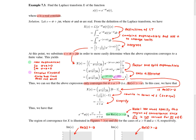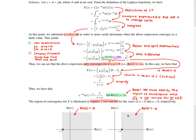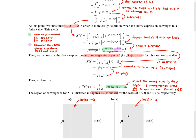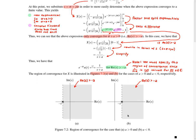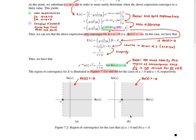The last part of the solution illustrates the region of convergence of X: in the case of a > 0 in figure A on the left, and a < 0 in figure B on the right.